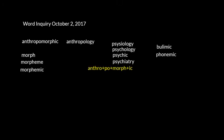But the -ic would be separate. So morph is a different free base. We have this base: anthro, then poe, then morph, then -ic. So we can make a word sum now. Let me paste this in here. Anthropomorphic. Now we can start to break down what these words mean — morph, morpheme, and morphemic, as well as anthropomorphic.